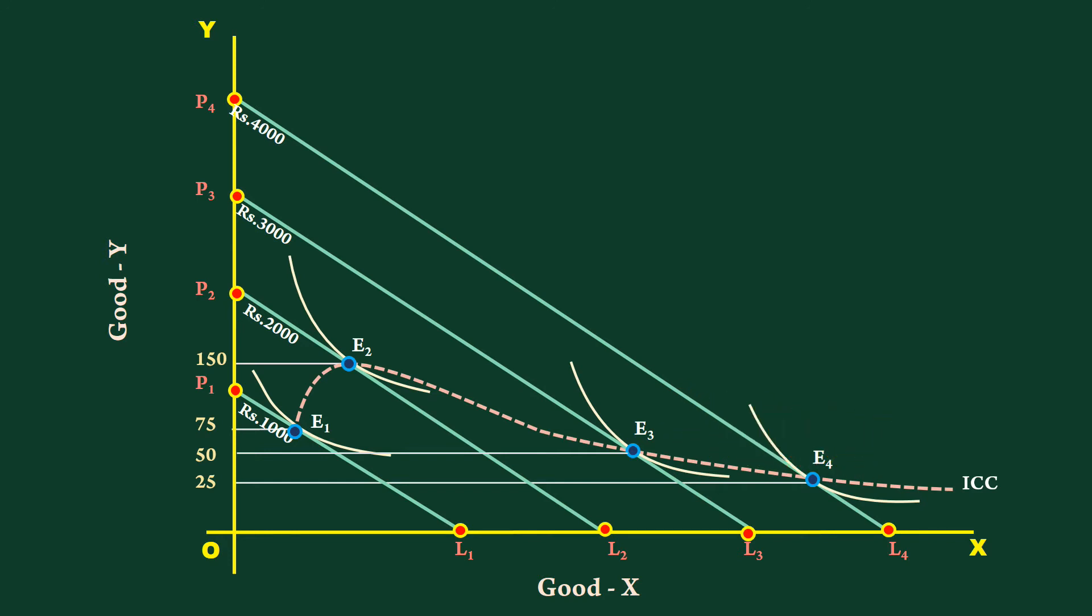It signifies the income effect of good Y is negative in this range. The good Y becomes inferior in the range of income over and above 2000 rupees. But look at the quantity bought of good X.